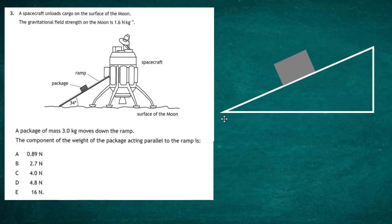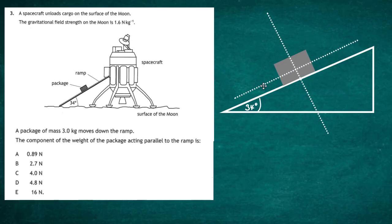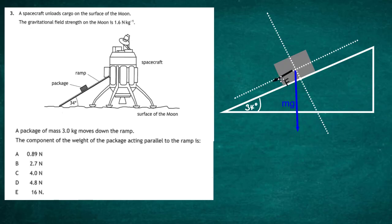We start with a picture of the ramp — 3 kilograms, angle of 34 degrees. To understand the forces acting on the package, it helps to draw axes parallel to the ramp. The weight acts straight down like a plumb line — mg acting downward. We can split that into two components: one perpendicular to the ramp and one parallel to the ramp, which is the one we need to find — the force acting down the slope.